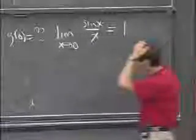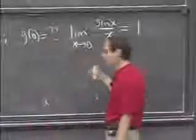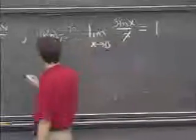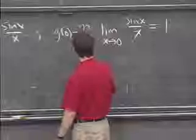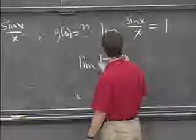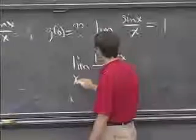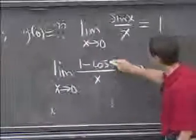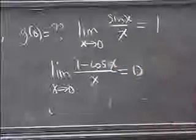So that's a very important limit that we'll work out either at the end of this lecture or the beginning of next lecture. And similarly, the limit of 1 minus cosine x divided by x, x goes to 0, is 0. Maybe I'll get that a little farther away so you can read it.